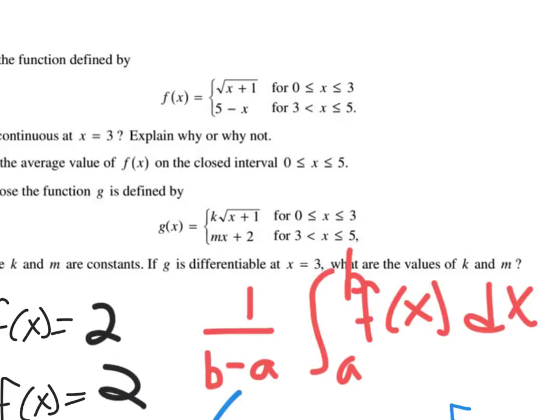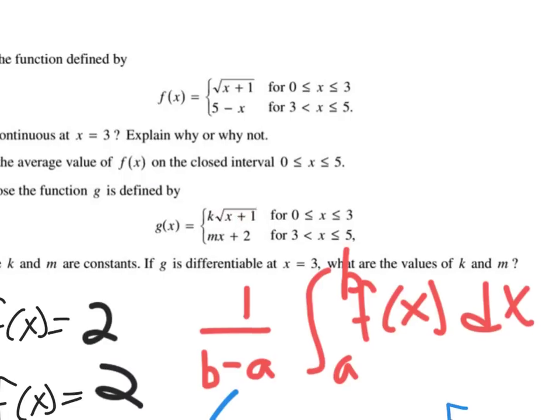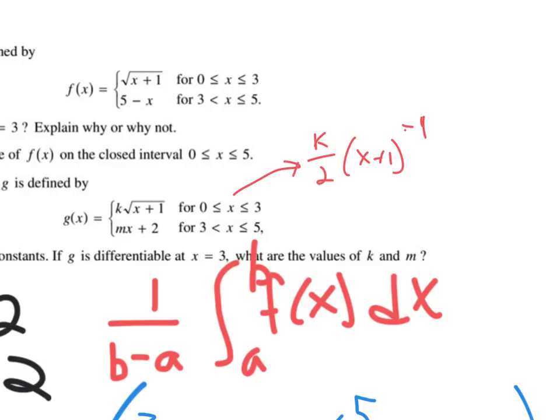For G to be differentiable at x equals 3, that's got to have the same derivative if you approach 3 from the left and from the right. So let's take the derivative of this with respect to x.